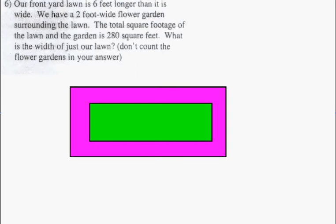We have a front yard lawn that is six feet longer than it is wide. So this is our width of our lawn, and this is the length of our lawn, which is equal to the width plus six. Okay, the total square footage of the lawn in the garden is 280 square feet.